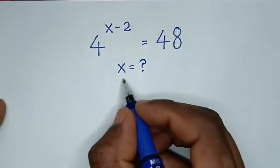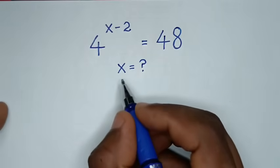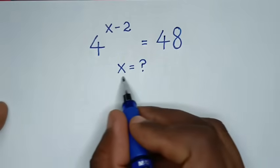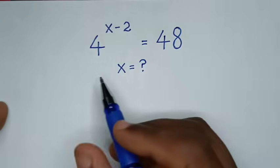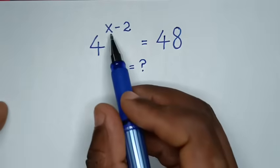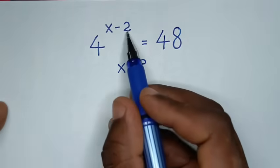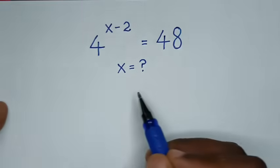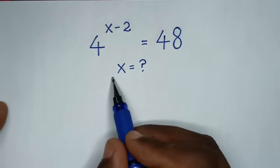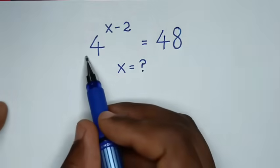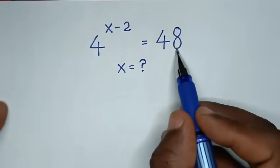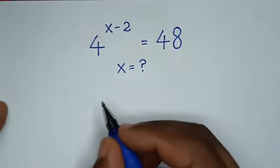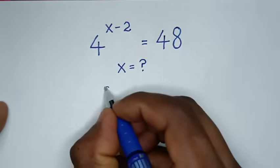Hello. You are welcome to solve this math problem, which is 4 power of x minus 2 is equal to 48, to find the value of x from this equation.